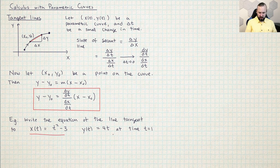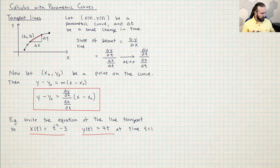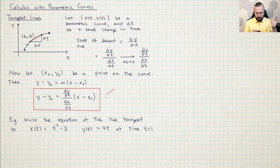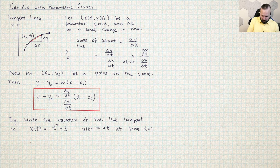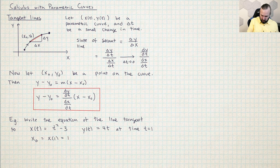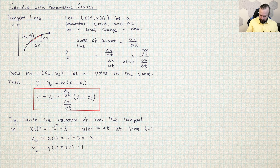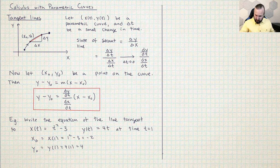Let's do a basic example. I'm asked to write the equation of a tangent line and they give me two parametric equations — these ones happen to be polynomials in t. I need to plug everything into the red formula, so I'll need a point (x₀, y₀) and a slope dy/dt over dx/dt. First, let's find the point. x₀ is x at time one, so that's 1² minus 3, which is negative two. And y₀ is y at time one, so that's 4 times 1, which is four. So I've got the location of the point.